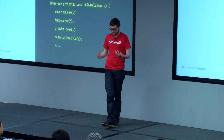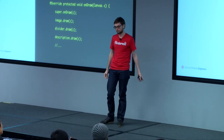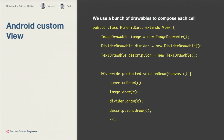People asked what custom views actually look like. Here's a snippet of code — PinGridCell, the core of our application, on just about every screen. You have a view subclass with a bunch of drawables in it. We made custom drawables for every reasonable bundle of view — a big image that might have a gradient on it, a simple divider, a description text that handles its own ellipsizing or max line count. You combine them all together and fit them into your onDraw method.